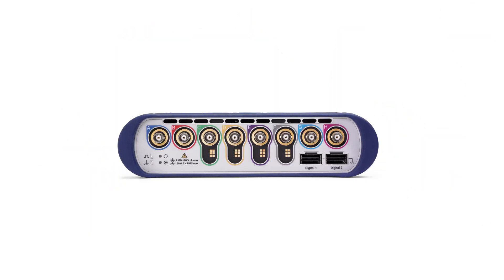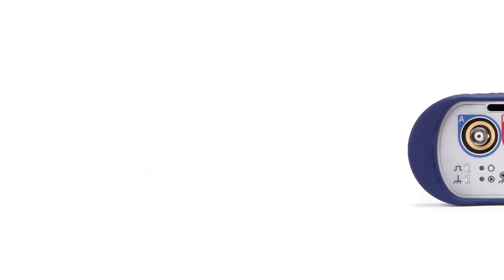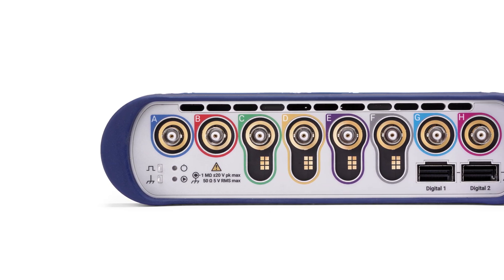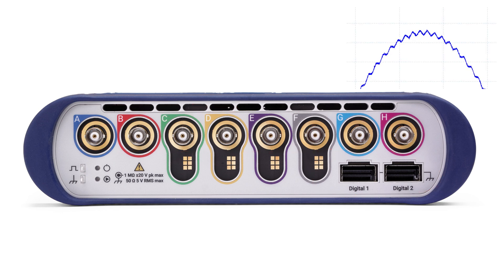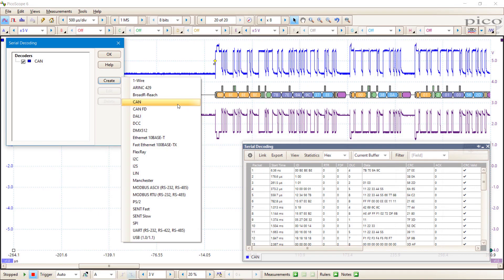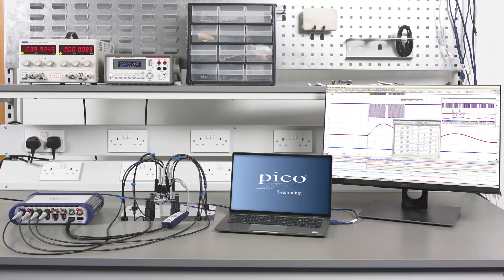The Picoscope 6000E series mixed signal oscilloscopes fit easily on a desktop. They give you all the tools you need to validate and debug complex embedded systems with up to eight 500 megahertz analog channels, optional eight or 16 digital logic channels, eight, 10, or 12 bit flexible resolution, deep capture memory to four giga samples, 21 serial bus decoder analyzers included as standard, and a 50 megahertz arbitrary function generator also included as standard.